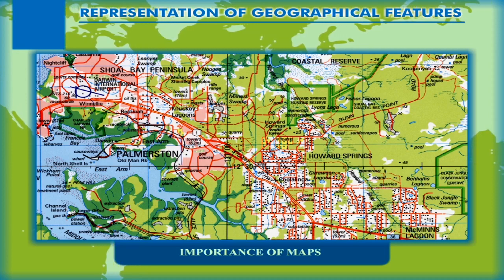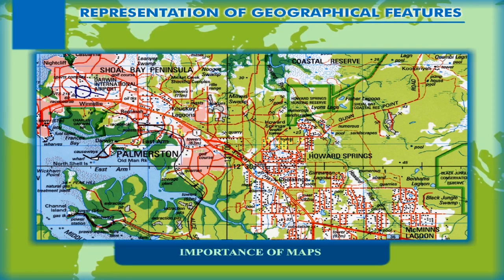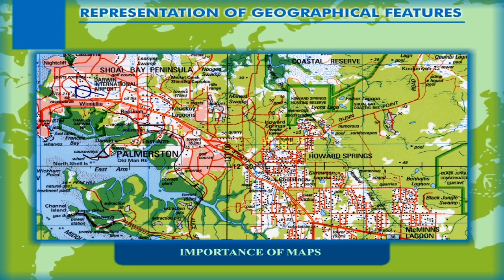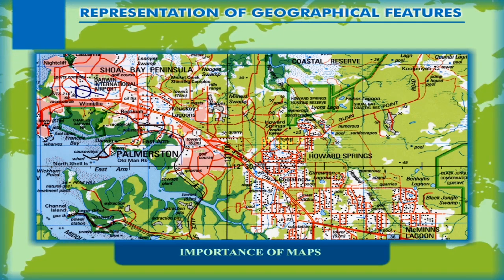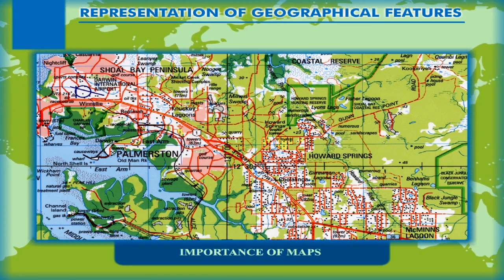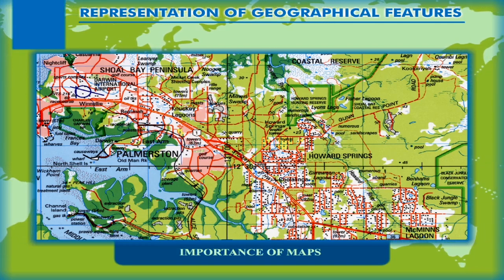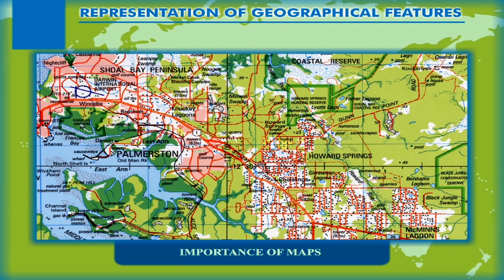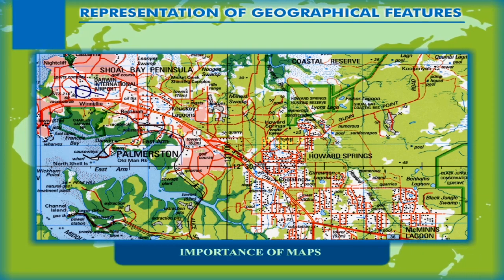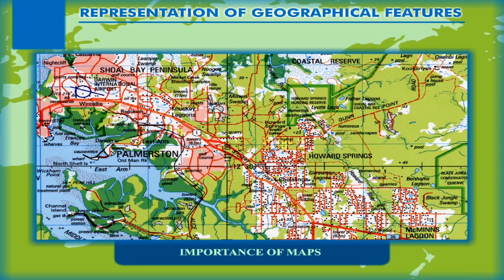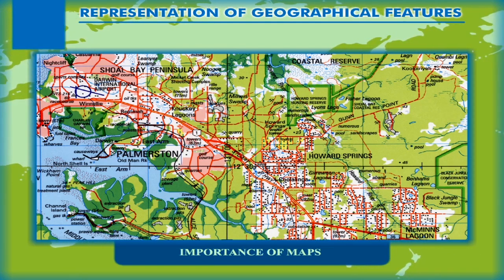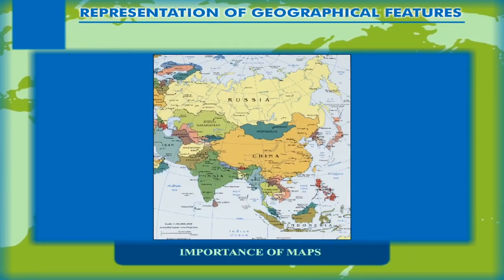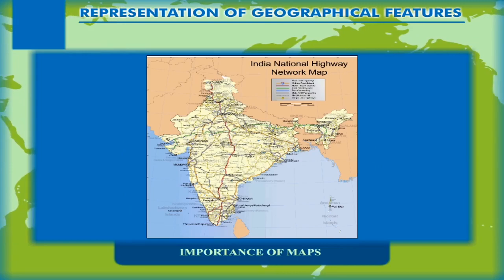Geographical maps represent the whole earth or any part of it on paper or any flat surface. Maps provide a variety of information about any area, and thus they are classified into various types. Maps are generally classified into three types: physical maps, political maps, and thematic maps.